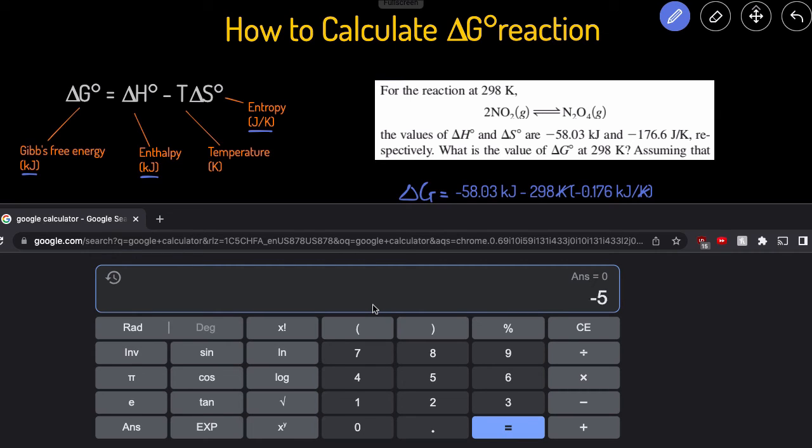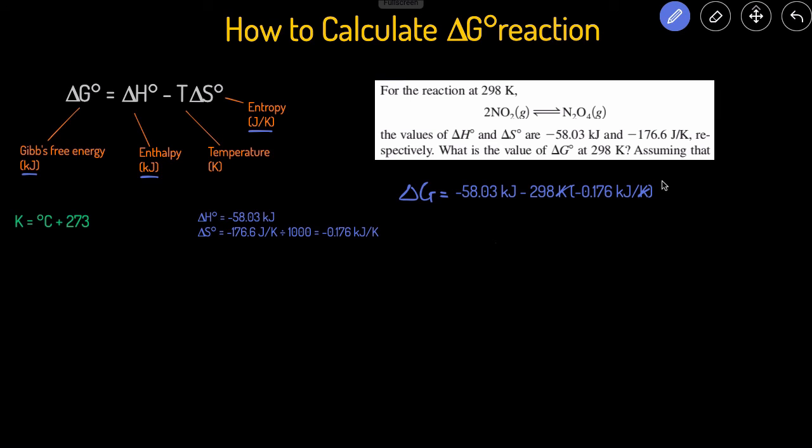So we'll start with negative 58.03 minus 298 multiplied by negative 0.176. And then that gives us negative 5.582. So that means the delta G here is going to equal negative 5.582 kilojoules.